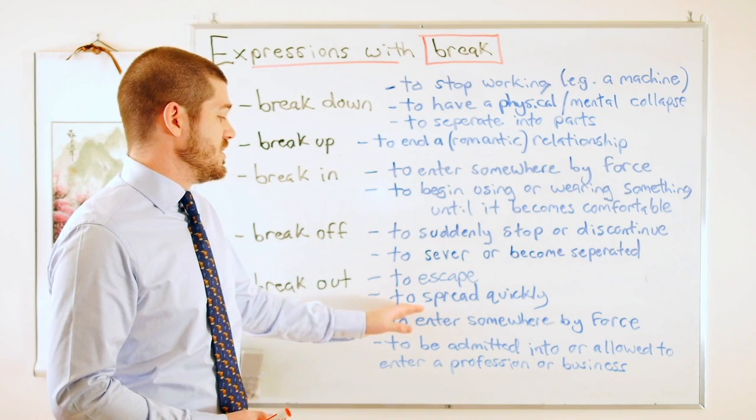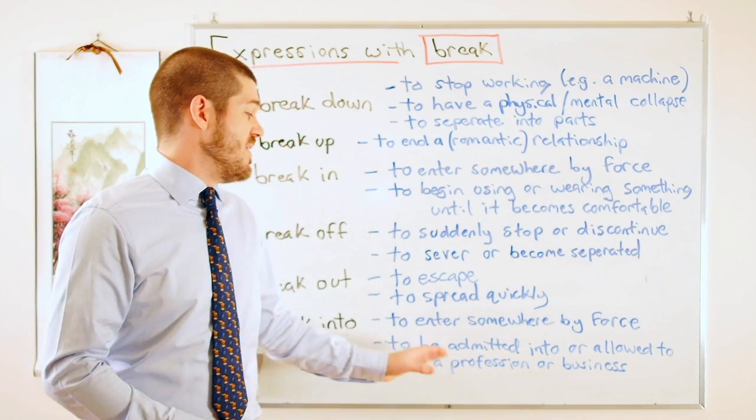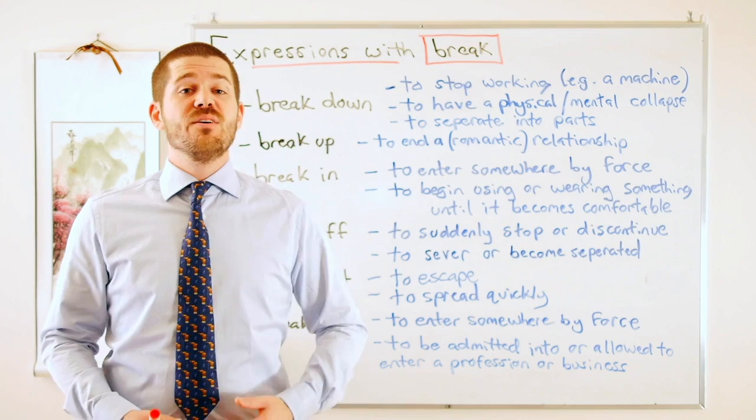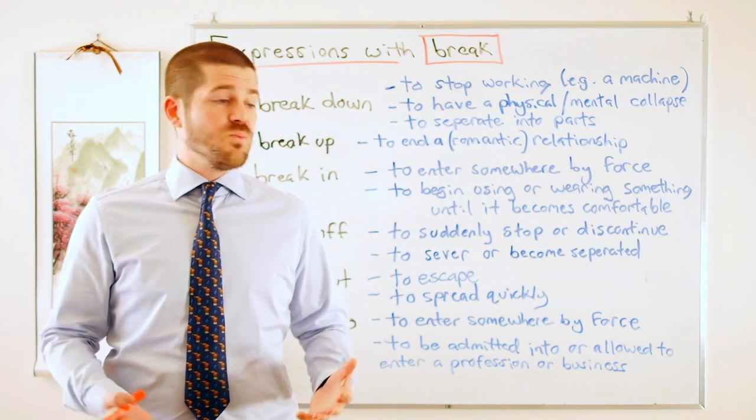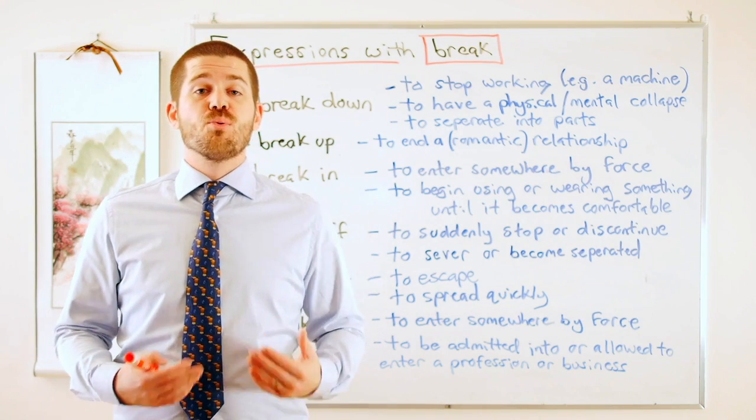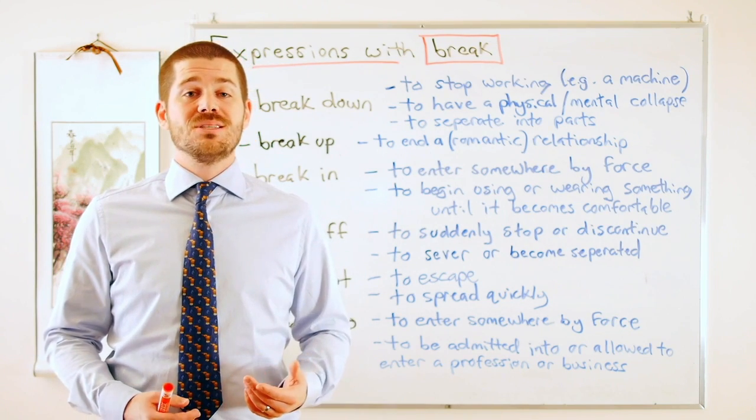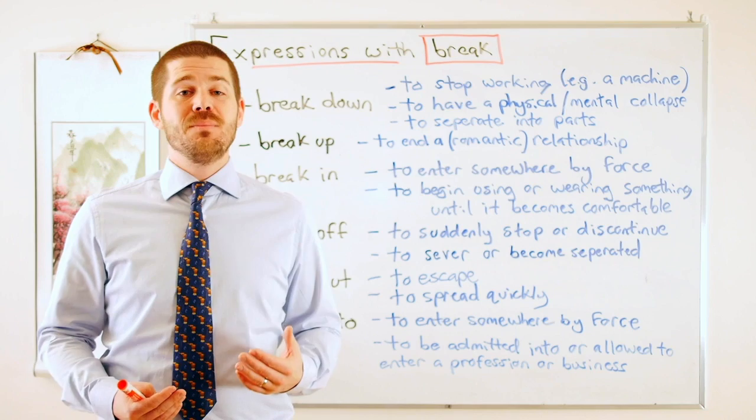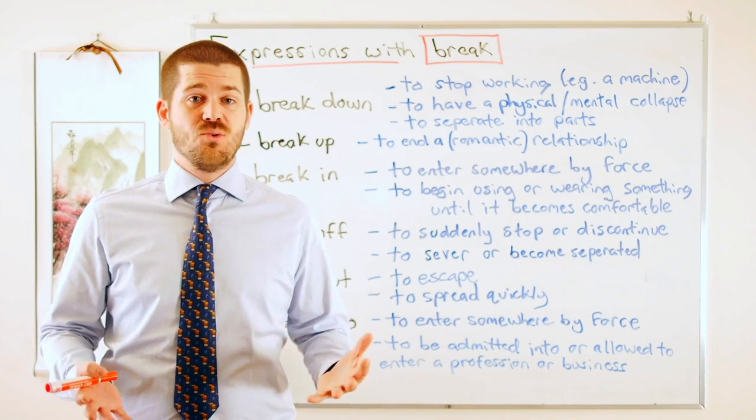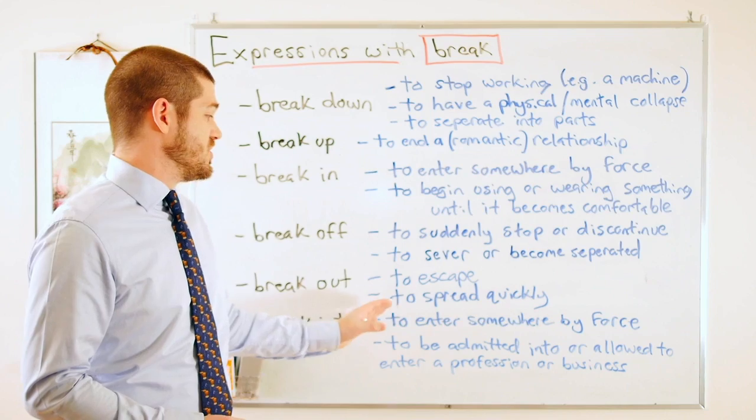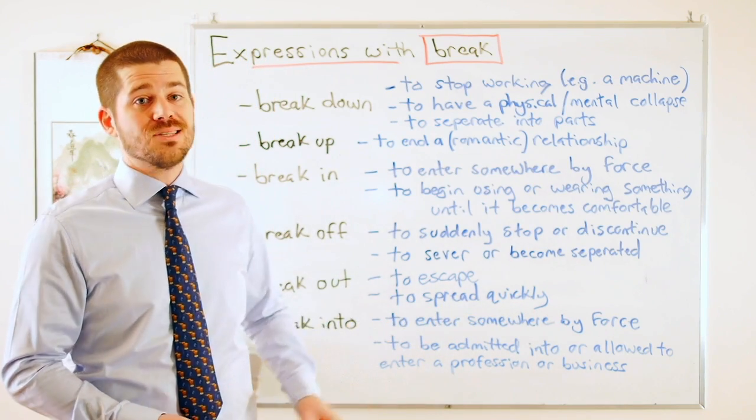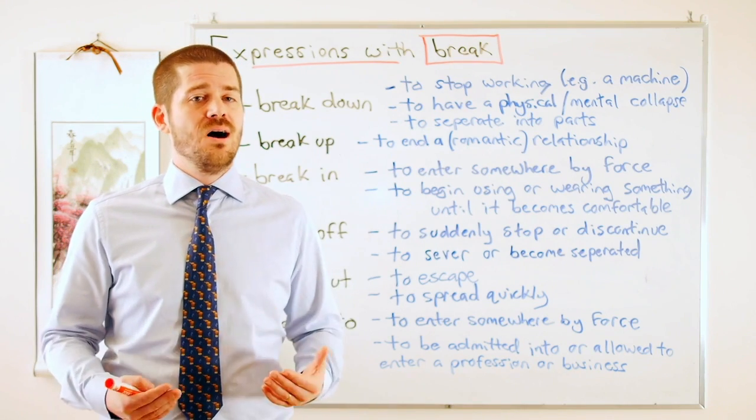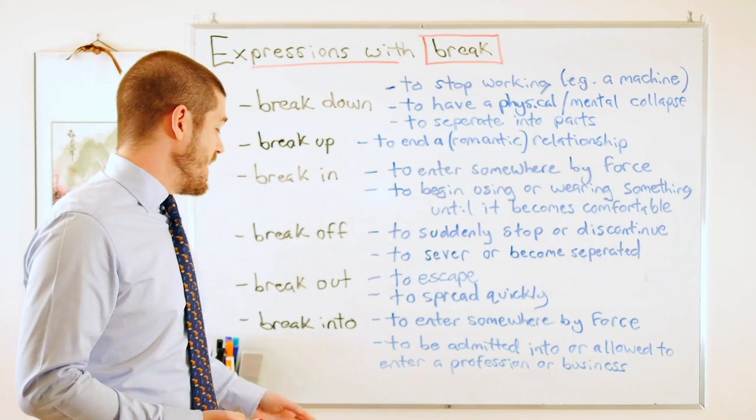The second definition says to spread quickly. And this is usually something negative like a virus or a disease. So if a disease spreads quickly, we can say the disease broke out. Same thing if I'm talking about say Ebola. Ebola broke out in West Africa. This means Ebola spread quickly through West Africa. So again if something spreads quickly, if something breaks out, it's usually something negative. We wouldn't say a good thing broke out, usually not. It's usually negative things.